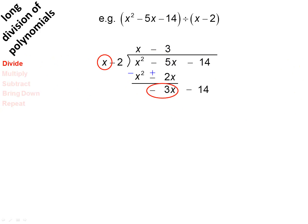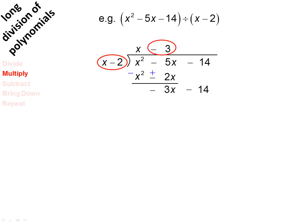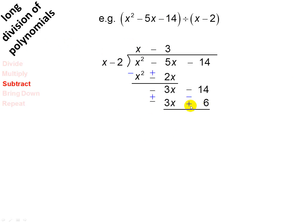Now we're going to multiply: minus 3 times x minus 2 gives you minus 3x plus 6. Next step, subtract — change the sign on the bottom line and add. Minus 14 and minus 6 gives you minus 20. x won't go into minus 20, so there is your remainder.